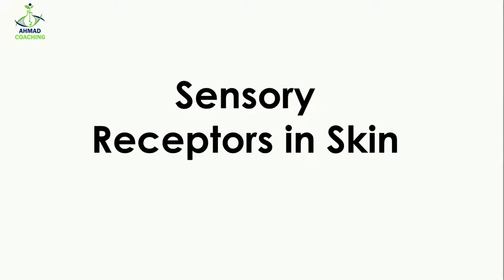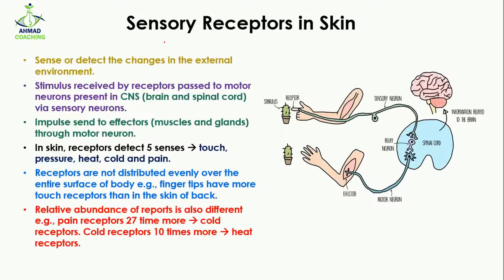Welcome to Ahmed Coaching. I'm your teacher Dr. Anam. Today we are going to study about sensory receptors in the skin. The sensory receptors sense or detect changes in the external environment. Any change in your outside environment is going to be detected by the sensory receptors. The stimulus received by these receptors is then passed to the motor neurons present in the central nervous system, which includes the brain and spinal cord, via the sensory neurons.